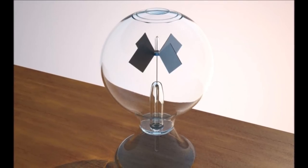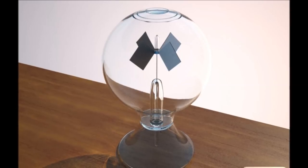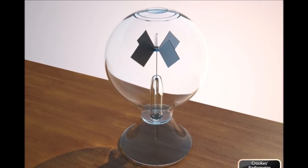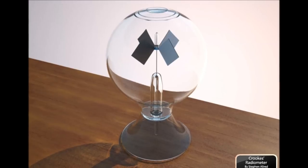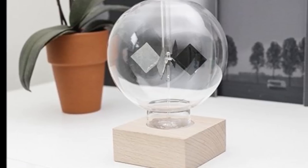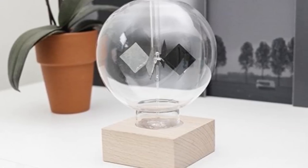Inside that glass bulb it's a partial vacuum, meaning there's very little air in there, almost none. The air molecules that are in there are allowed to move freely and they want to balance themselves out amongst the area that they have.